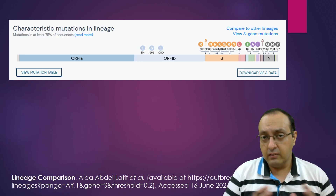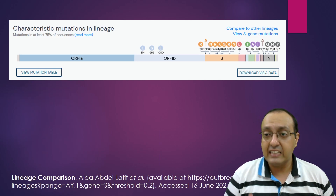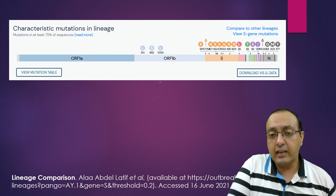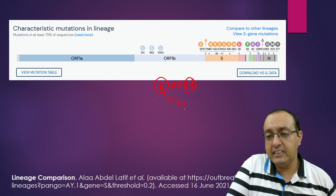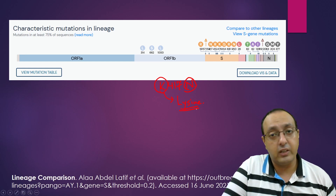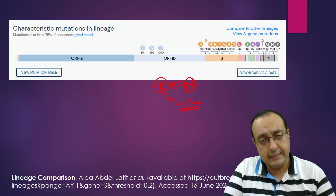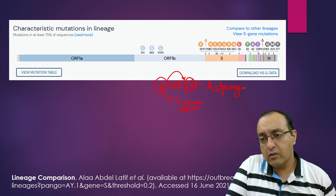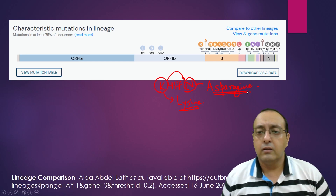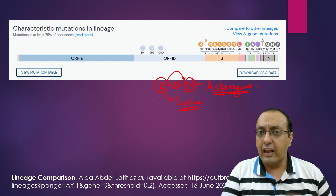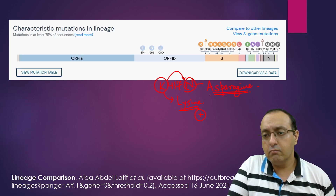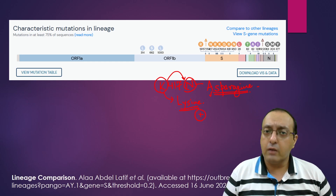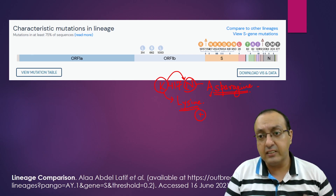One characteristic mutation in the Ay.1 lineage is called K417N. K stands for lysine, an amino acid in the spike protein — proteins are made up of 20 different types of amino acids and lysine is one of them. It has been changed to asparagine. This is a striking change because lysine is a positively charged amino acid, whereas asparagine is a polar but uncharged amino acid. This change occurs in the spike protein.